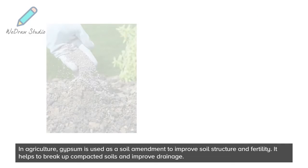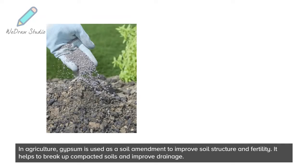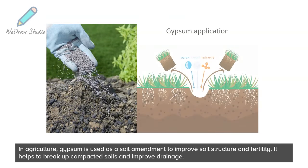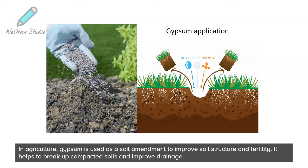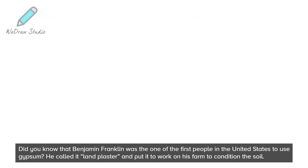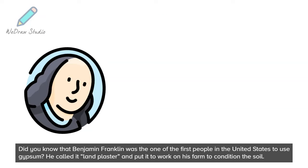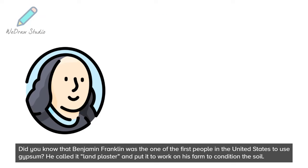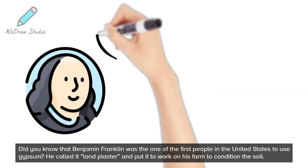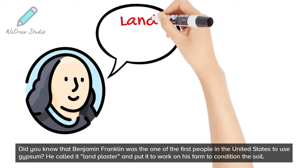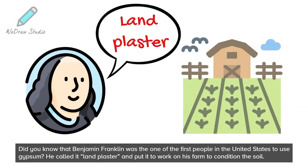In agriculture, gypsum is used as a soil amendment to improve soil structure and fertility. It helps to break up compacted soils and improve drainage. Did you know that Benjamin Franklin was one of the first people in the United States to use gypsum? He called it 'land plaster' and put it to work on his farm to condition the soil.